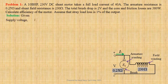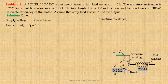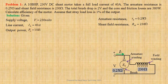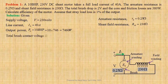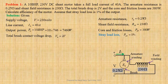Supply voltage V equals 230V. Line current IL equals 40A. Armature resistance RA equals 0.25Ω. Shunt field resistance RSH equals 230Ω. Given output power PO equals 10 BHP. Since 1 BHP equals 746W, PO equals 10 × 746W equals 7460W. Total brush contact voltage drop VB equals 2V. Core and friction losses PFR equals 380W. Stray load loss PSTR equals 1% of PO, equal to 0.01 × 7460W, that is 74.6W.